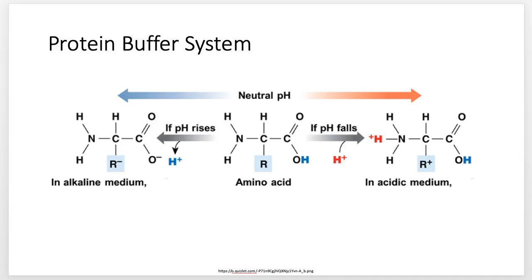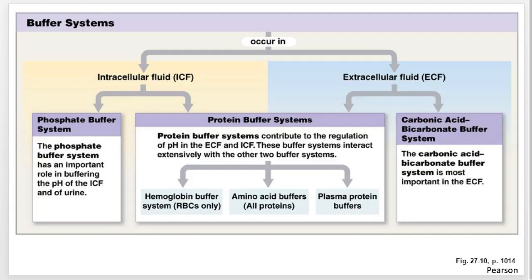The phosphate buffer system and the bicarbonate buffer system are the two biggies. If you have a patient going through renal failure or having kidney issues, that's where it can start messing with things. If you start messing with somebody's pH — especially in their blood — you can really, really mess things up. Even just a small change in pH can change somebody's life very fast.